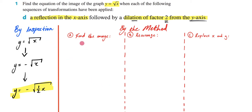Alright. So in our first step, by the method has three steps. We're going to find the image, then rearrange, and then replace. So the first one, find the image. What does that mean?